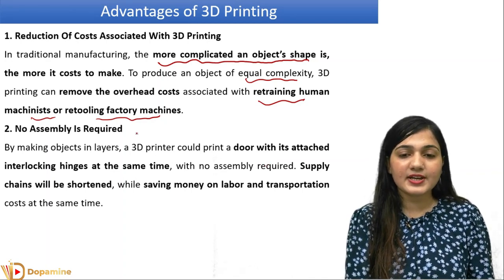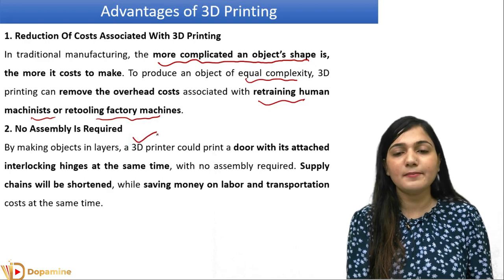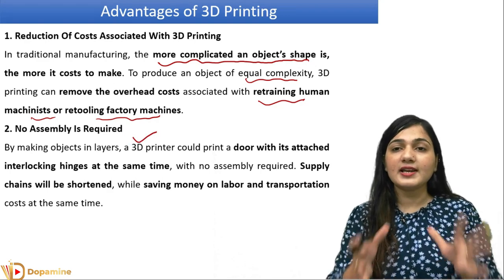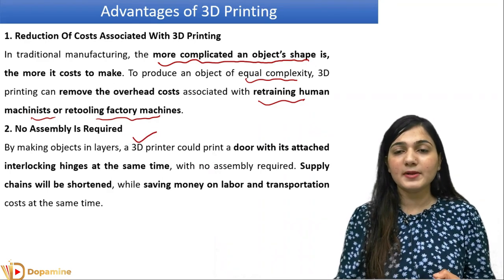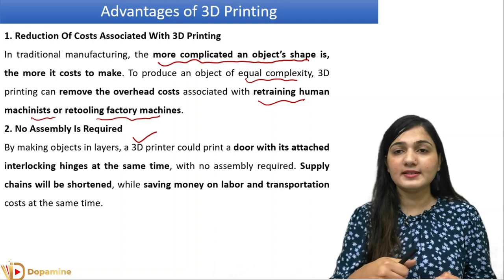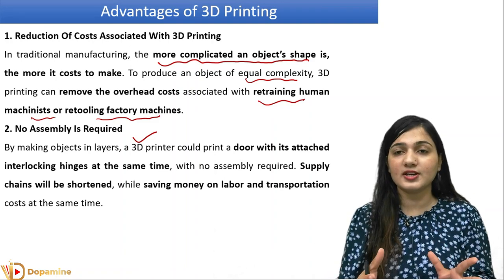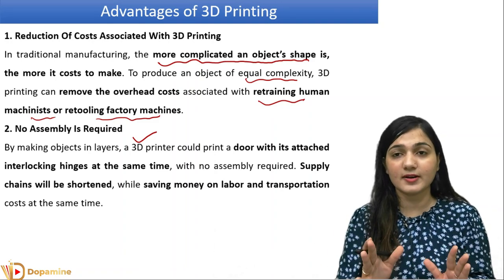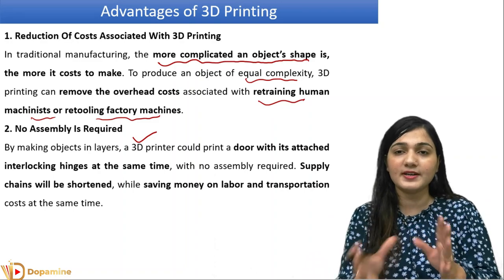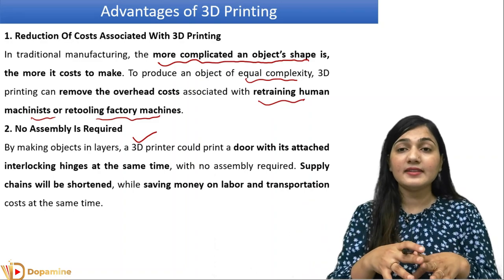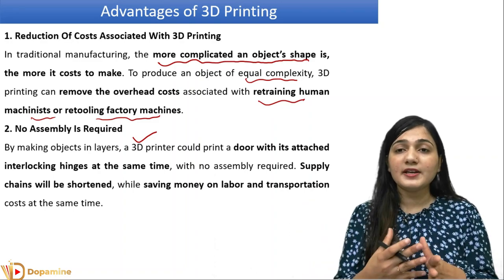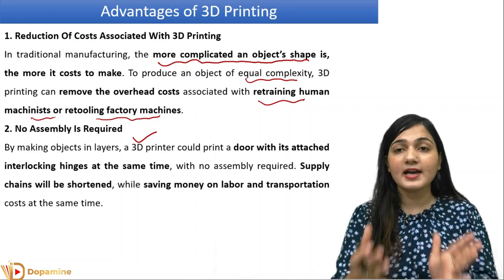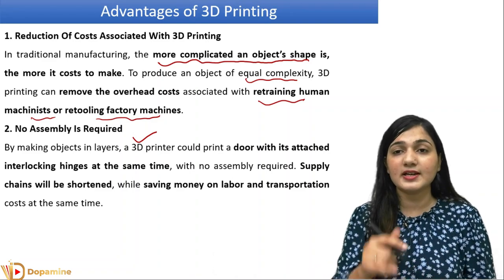The second advantage of 3D printing is that there is no assembly required — the whole structure is made together. I have given you a shoe example: the shoe laces are made separately, the whole shoe structure is made separately in factories, and then we combine them. In 3D printing, the whole structure will be made together, everything at once.